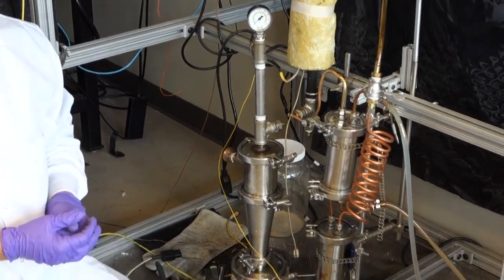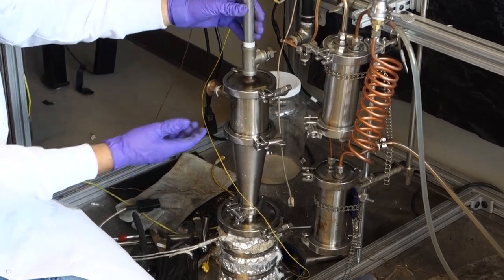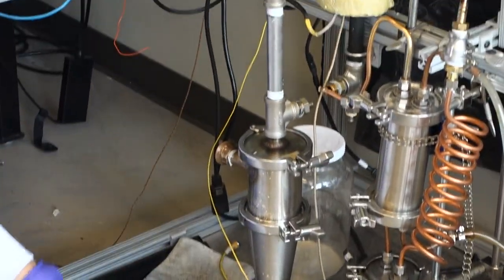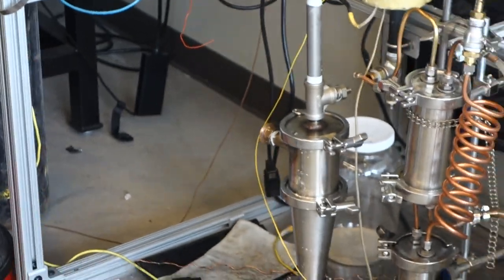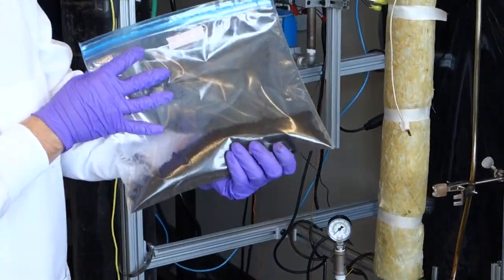This is a cyclone unit, which separates all of the biochar. This black material here looks a lot like charcoal.